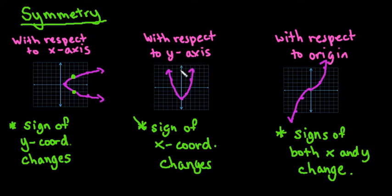With respect to the y-axis, this one is considered a function because there are no repeating x-values. For this one, the sign of your x-coordinate is what changes. So your y-coordinate stays the same, but your x-coordinates change signs.